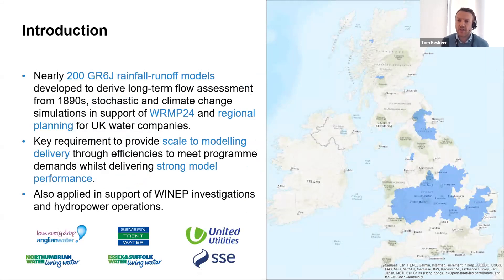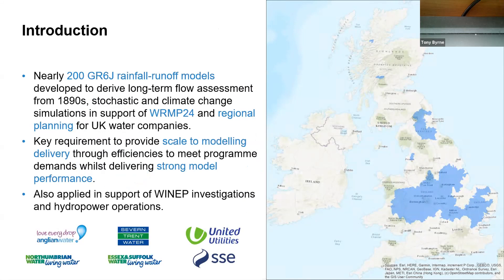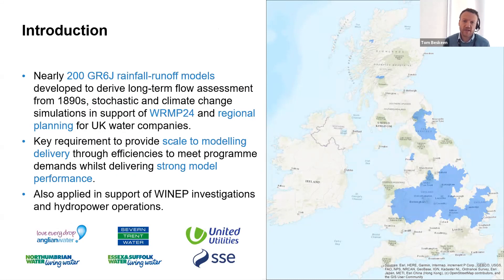Just to set the context of the work: back at that conference in September, Jeff Darch gave a really good presentation about better incorporation of drought risk and climate change projections into water resources planning, and as part of that he mentioned the development of rainfall-runoff models which underpin a lot of that work. This presentation really builds off that — it's driven by the need for assessing historic droughts that often fall outside of the historic records, and also stochastic and climate simulations. That's the key driver, and it's in support of the water resources management plan development for 2024 and also for regional planning purposes for UK water companies.